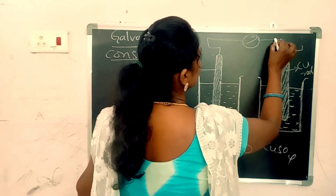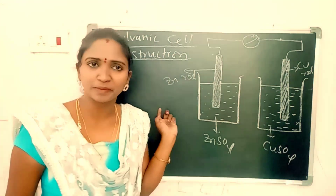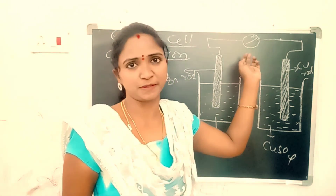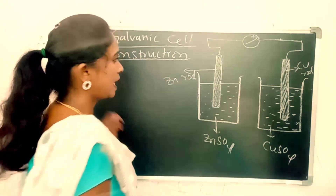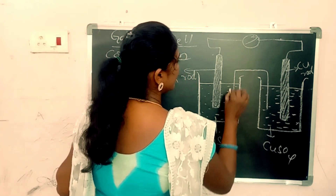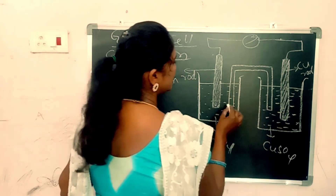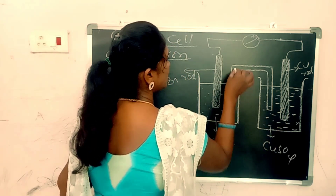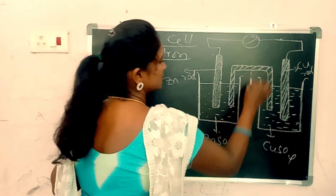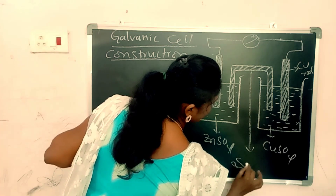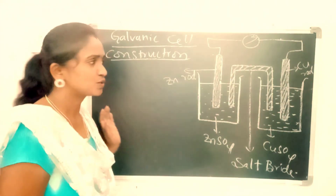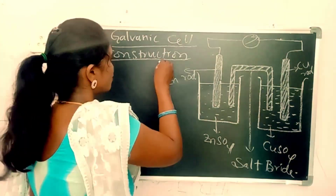Both the electrodes are connected to the voltmeter. And this inverted U-shaped salt bridge connects the two half cells. This is the construction of galvanic cell.